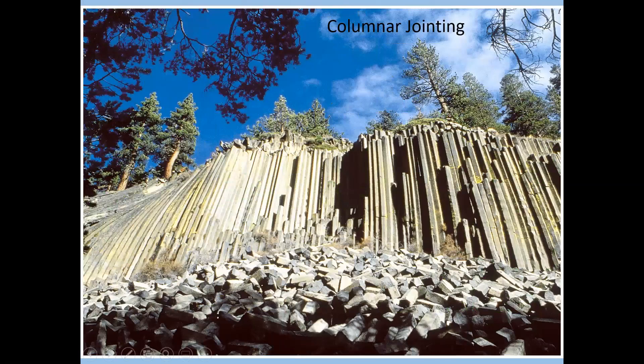Columnar jointing produces these perfect columns. You can see the shapes along with the talus pile at the bottom. Basalt is an igneous rock that forms from the solidification of lava. When it crystallizes, it has a unique pattern of weak areas that are polygonal in shape, and that's where freeze-thaw action is concentrated, producing these unique columnar features.